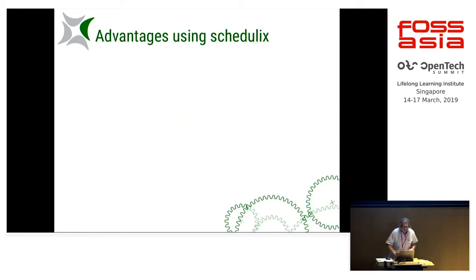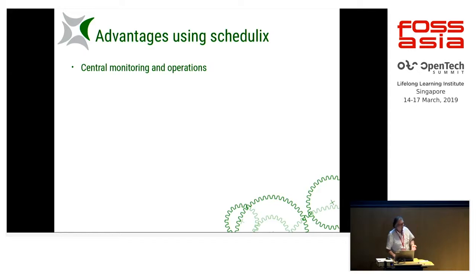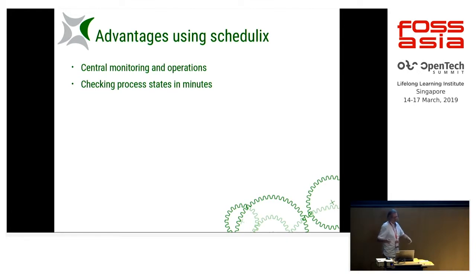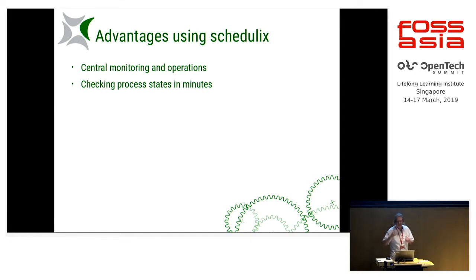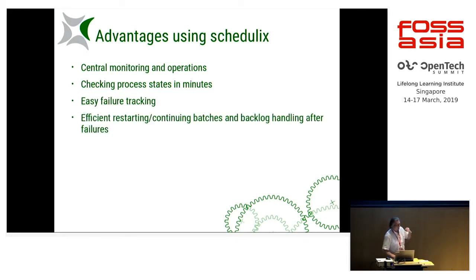What do you get? You have central monitoring operations. You go into your office, open a browser, and check the process state of your system in minutes. Everything green — you know it's fine. If something failed, you see a red line, go there, look at the log file from the web interface, see it was a snapshot too old, just rerun, and everything continues. You don't have to remote log in, edit scripts, or do programming to solve the problem. So you've got easy failure tracking and a very efficient restarting and continuing of batches and backlog handling after problems.